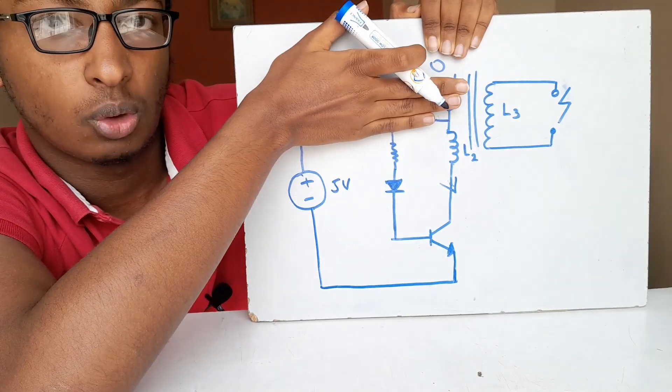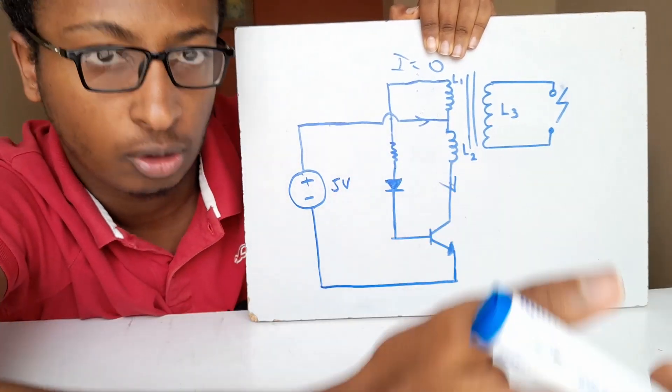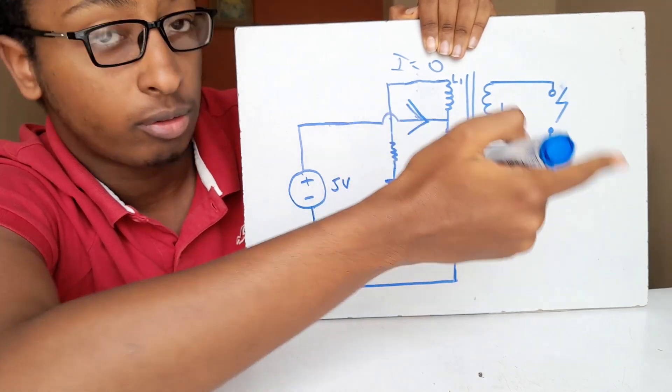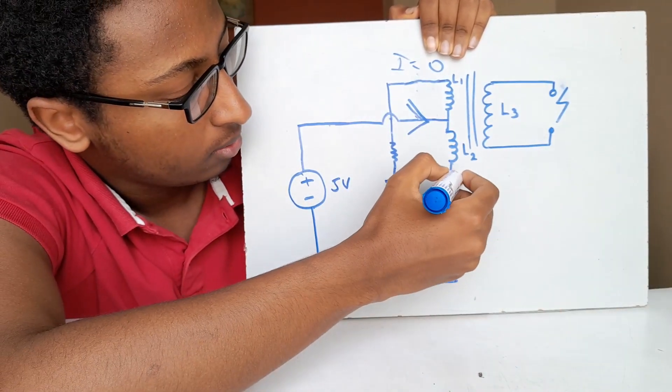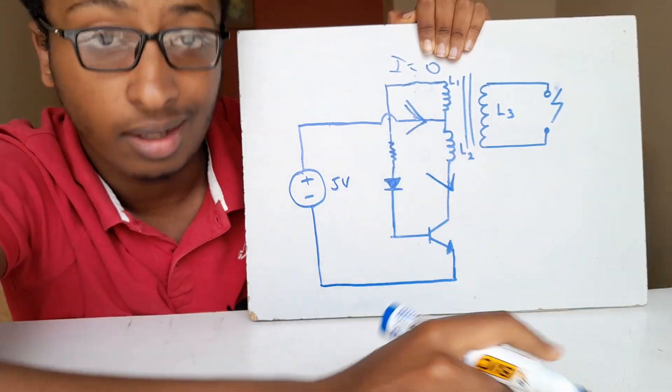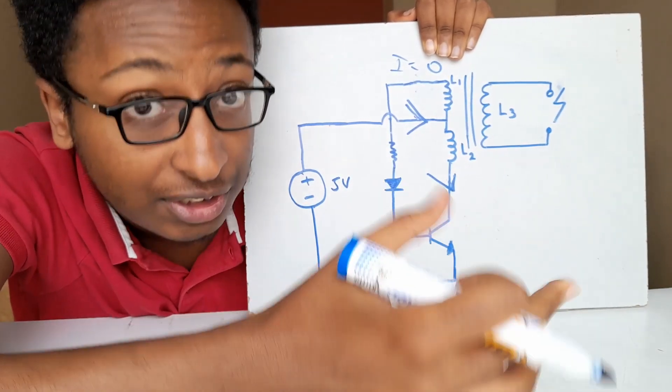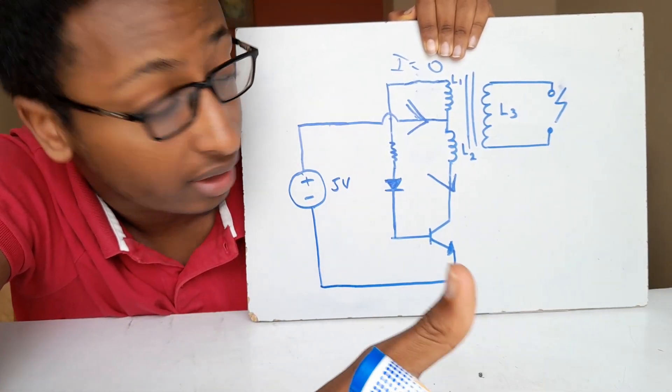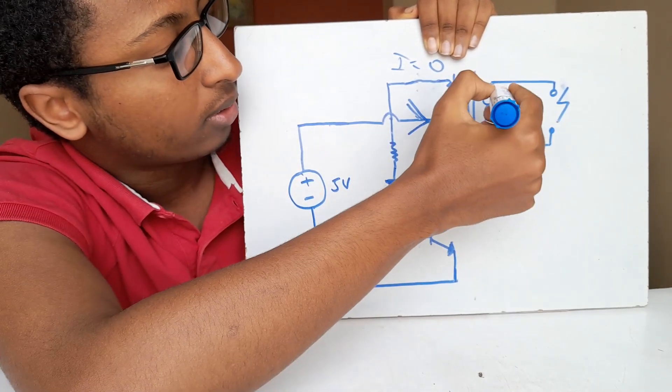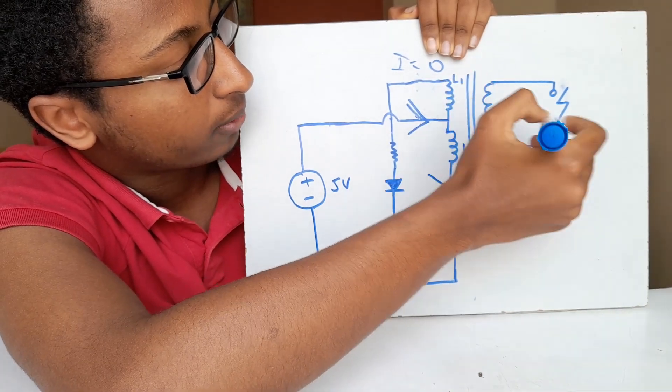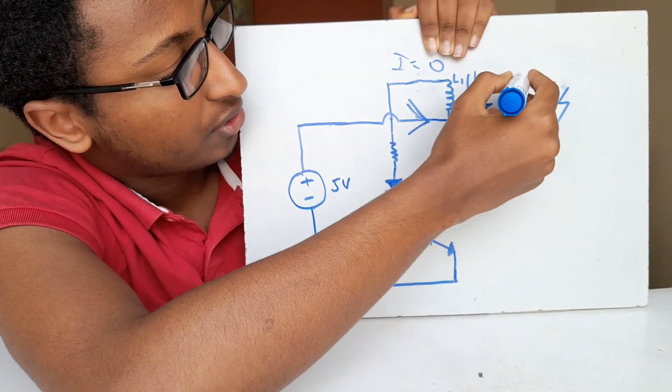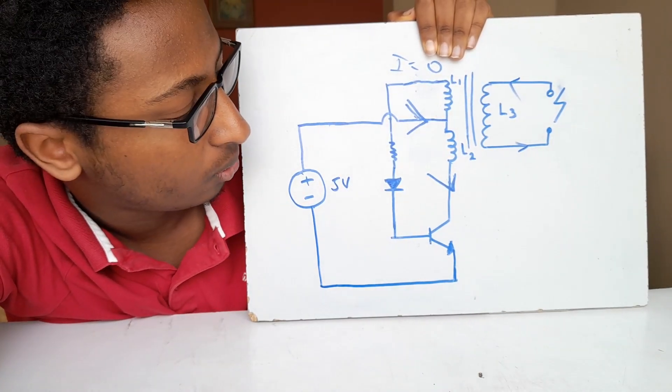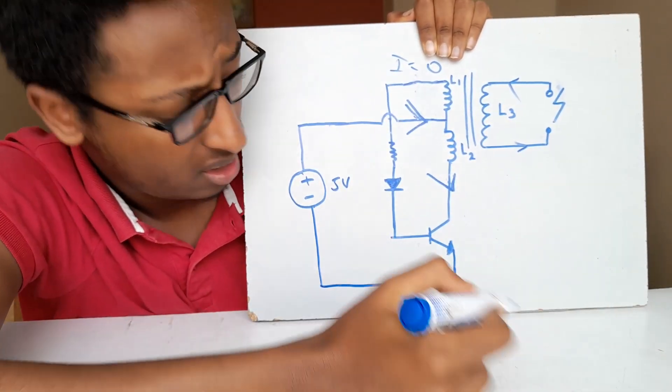But if there is no current flowing through L1, that causes a huge inrush current inside L2 because this side is blocked, so the only way it can go is through L2. So a huge amount of current is drawn through L2, creating a spike. That changing spike or changing magnetic field will create an induction current, creating voltage through L3.